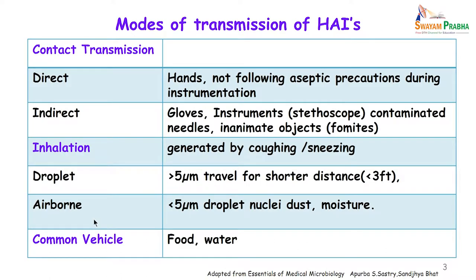What are the modes of transmission of hospital acquired infections? They are divided into three groups: contact transmission, which may be direct or indirect; inhalation, which is droplet or airborne; and common vehicle. In direct contact transmission, it is usually via the hands which have not been washed properly or by not following aseptic precautions during instrumentation.